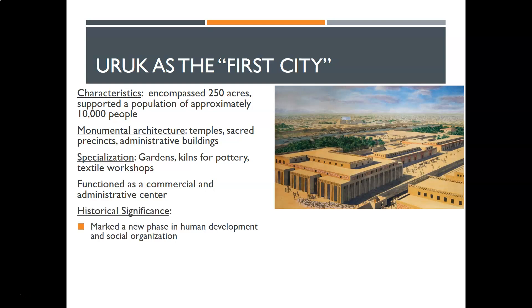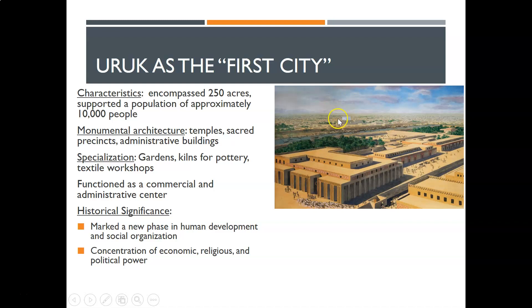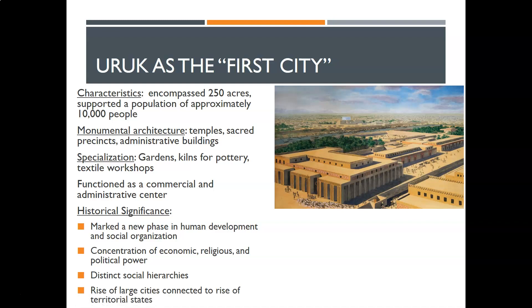This represents a new phase in human development and social organization, moving away from what came before. Economic, religious, and political power are all tied to this place. If you look at the city, you can see the ziggurat at the center. The river is really the center of the city, but you're going to have the temple over here, and what would be more the palace there — two loci of power. And you're going to get those hierarchies, rising eventually to territorial states and even empires.